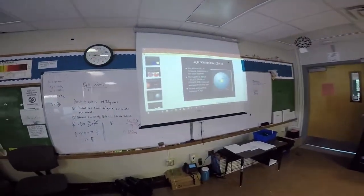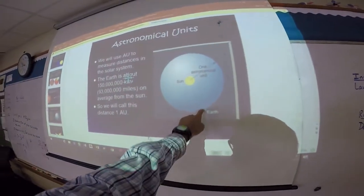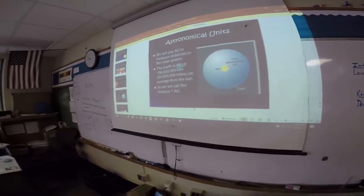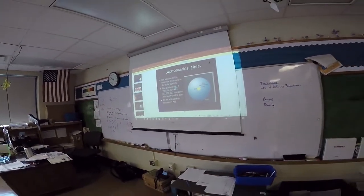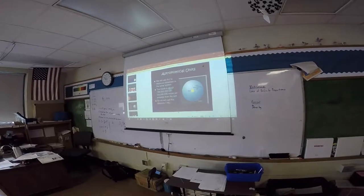The 1 AU is the distance from the Earth to the Sun. So here's the Earth, here's the Sun.